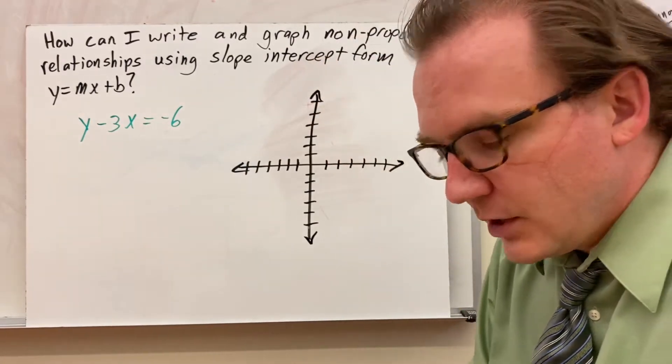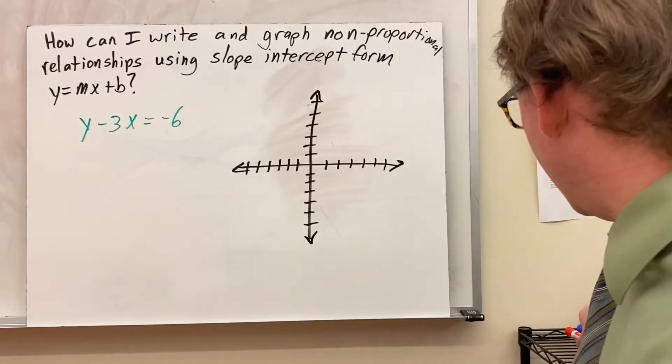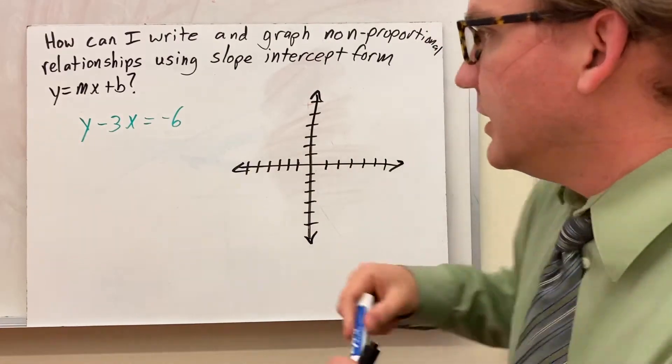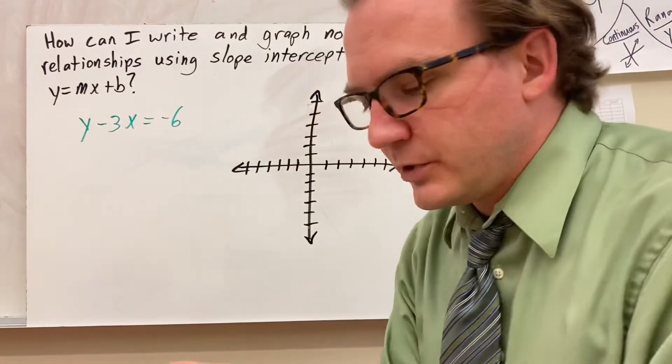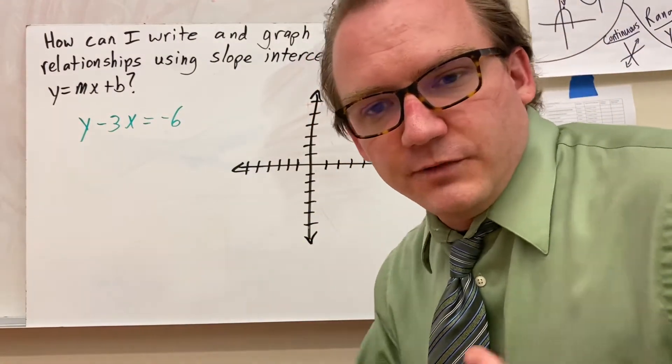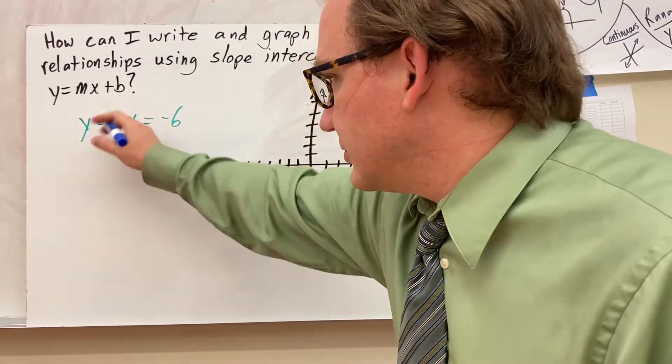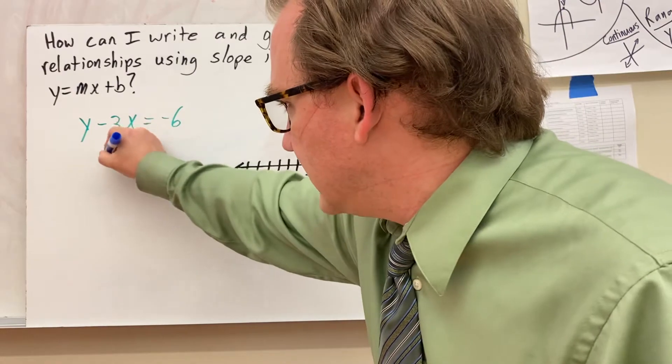To do that, we want to isolate the y, or get the y alone, or basically move the x term over to the other side. In this case, I'm going to use principles of algebra or things you might have learned in solving one or two-step equations. I'm doing y minus 3x, so to move this away, I just add the opposite.